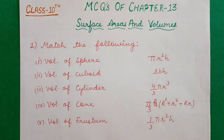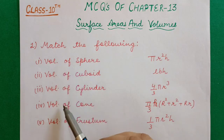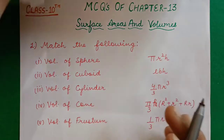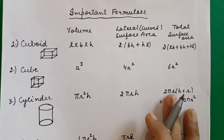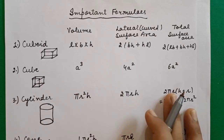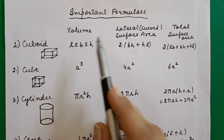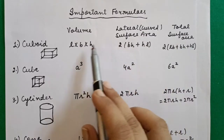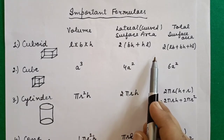Let's start with our first question — match the following. On the left-hand side you have solid figures and their volumes. First, students, you need to remember all the formulas of this chapter — volume, lateral surface area or curved surface area, and total surface area. Without these formulas, not a single question of this chapter can be attempted.